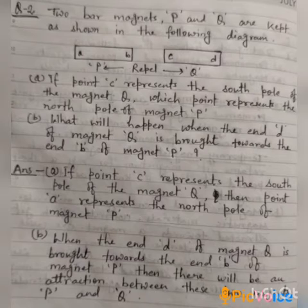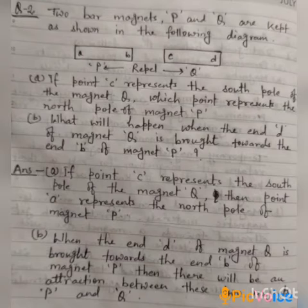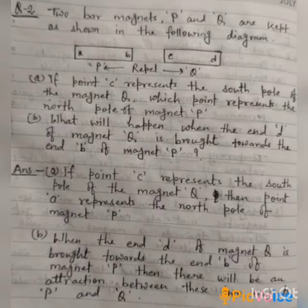If C is the south pole of magnet Q, then B of magnet P will also be the south pole, and therefore A will be the north pole. So point A represents the north pole of magnet P. For the next part, end D is the north pole of magnet Q, so when brought towards end B of magnet P, there will be attraction between them because unlike poles are facing each other.